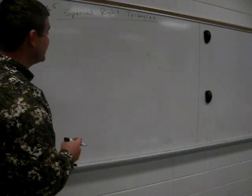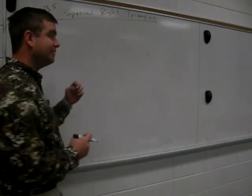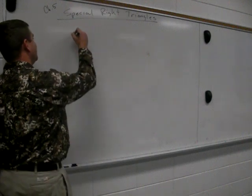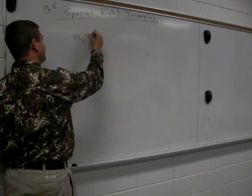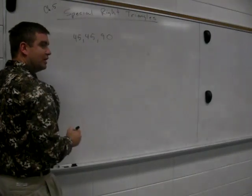Chapter 5, Special Right Triangles. We have two types of triangles to cover. Today we're going to do the easy one first, 45-45-90 triangle.